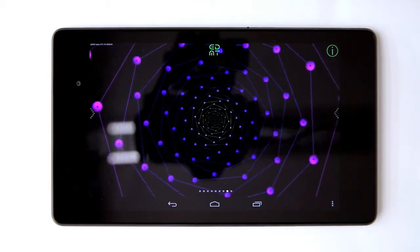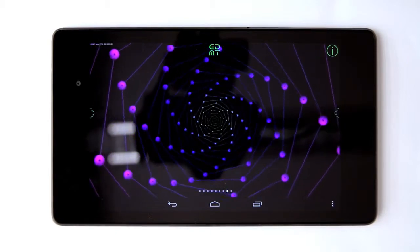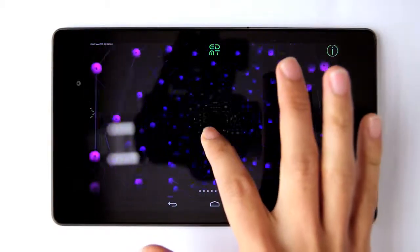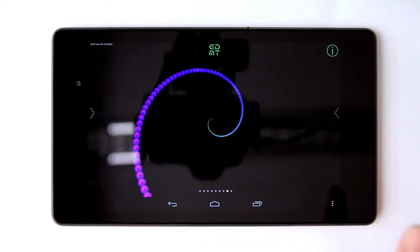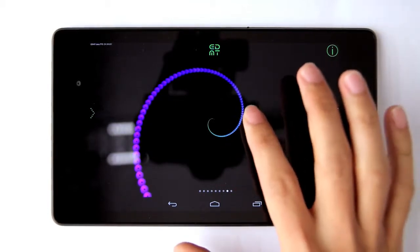To interact, you simply drag across the screen with one finger, and this is changing the spiral into different shapes.